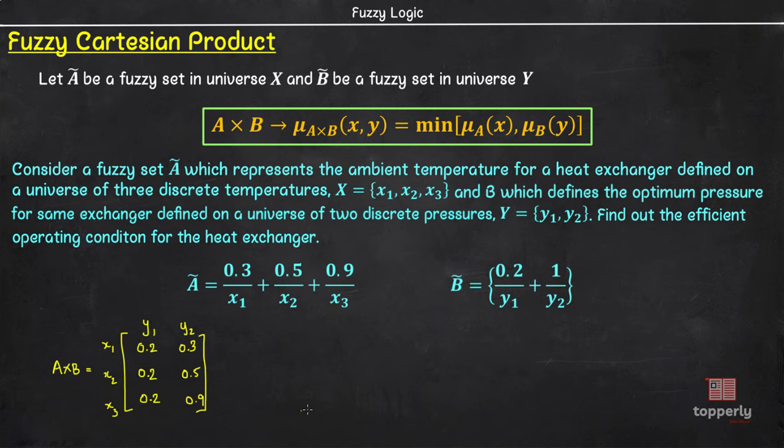Now, one more thing you should understand is that every relation R defined from the fuzzy set A to fuzzy set B is a subset of the cartesian product A x B.